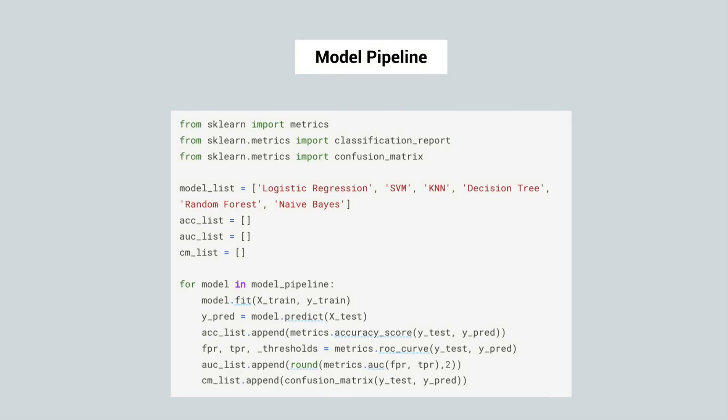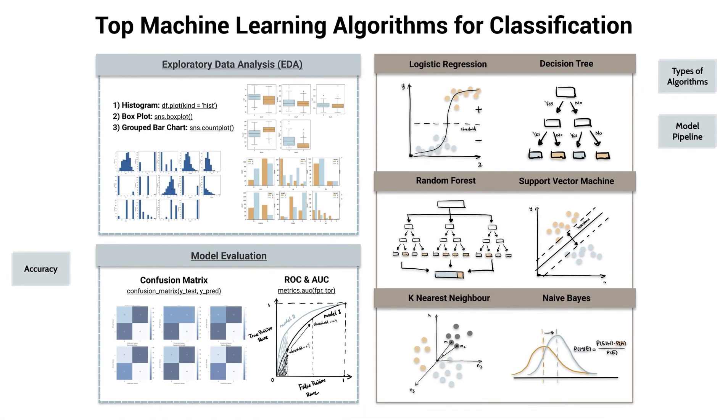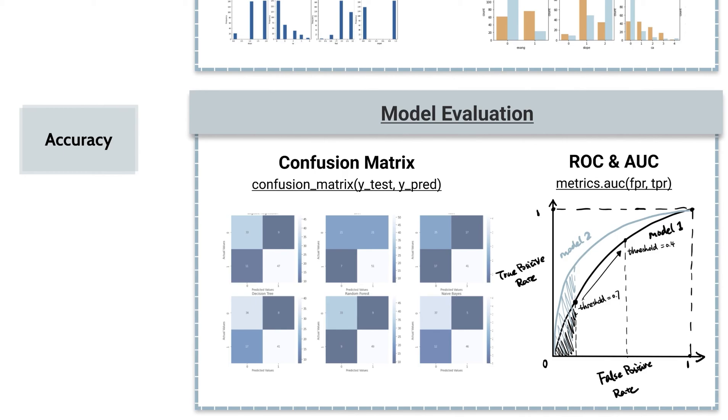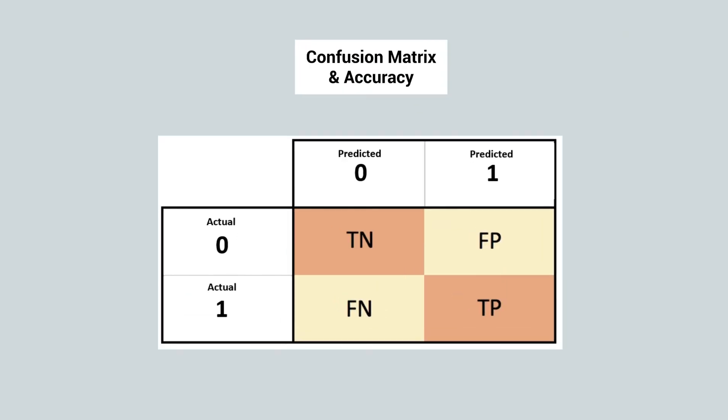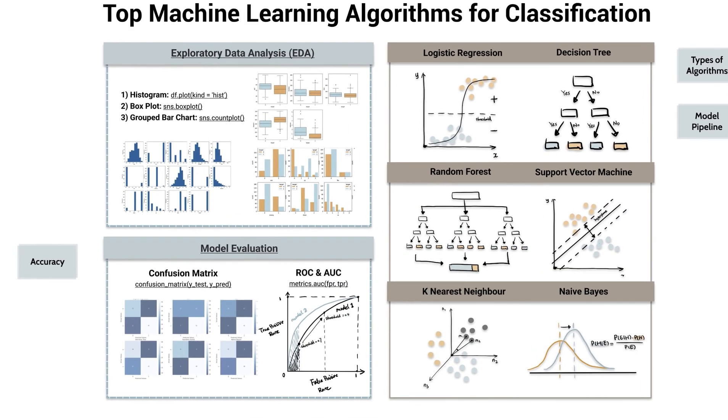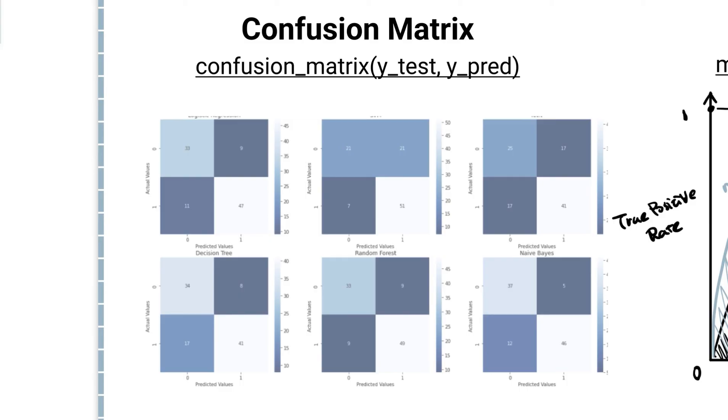After model training, the last step is to test the model evaluation. Accuracy is the most straightforward indicator of the model performance. It measures the percentage of accurate predictions, the sum of true positive and true negative, divided by the total. We can also use Seaborn to visualize the confusion matrix in a heatmap. Here is the comparison of confusion matrix of six classification algorithms.